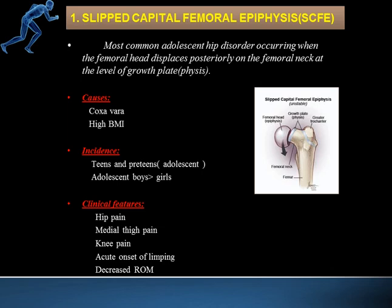The incidence is more common in boys compared to girls. Clinically, patients present with hip pain, sometimes medial thigh pain, and knee pain — since all these are a closed chain. There is acute onset of limping, meaning the patient suddenly cannot walk normally. Decreased range of motion is also expected, since once the femoral head is affected, hip range of motion is also affected.